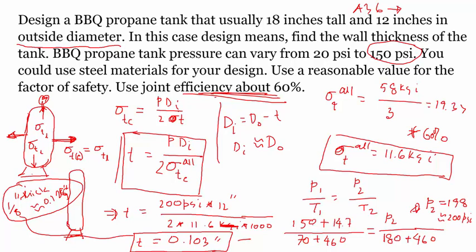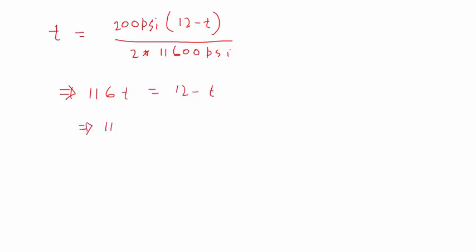Now, if we consider the thickness, let's see if the calculation changes. So, T is equal to, then it's going to be 200 psi, times 12 minus the thickness, divided by 2 times 11,600 psi. Now, if I solve for T from this equation, it's going to look like 116T is equal to 12 minus T. So, 117T is equal to 12, T is equal to 0.0125. So, this is again, if we use 1/8 thickness plate, which is 0.125, this should be okay.